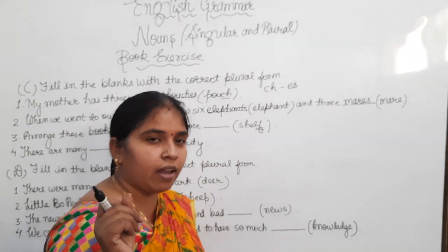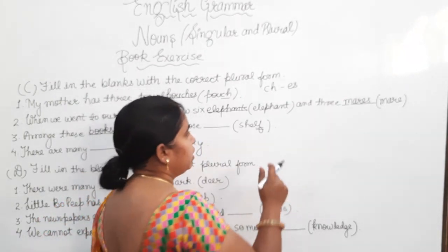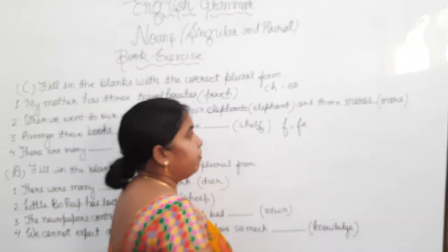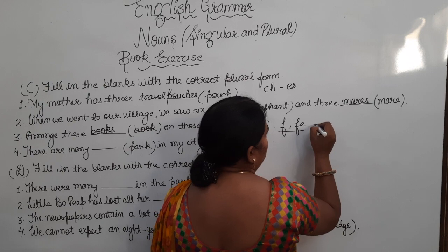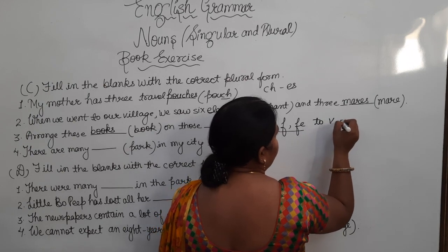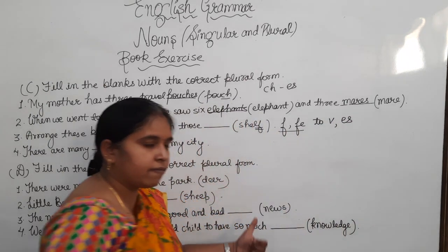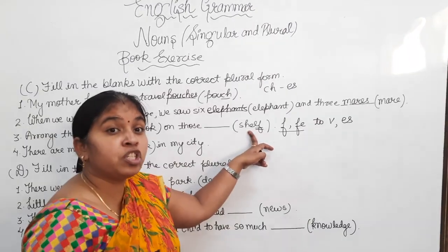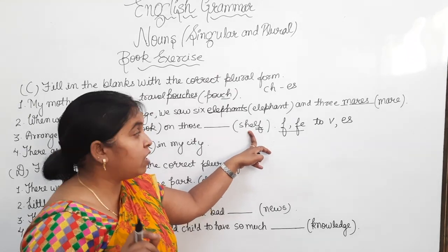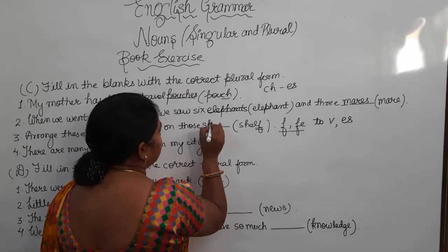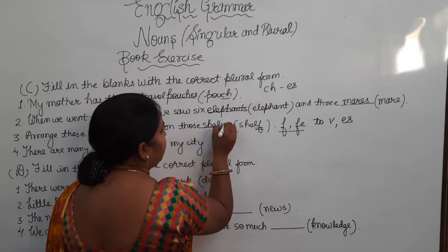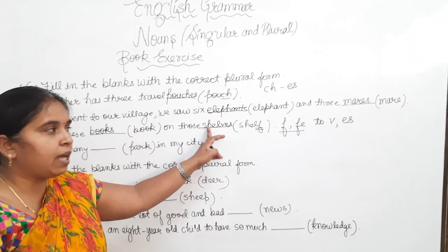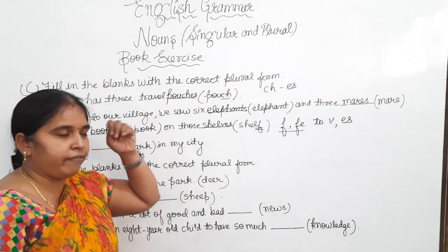When the last alphabet of the word is F or F-E, we change these to V and then add E-S. This we do as per the rule. So here, the shelf will become shelves. And what will be the spelling? S-H-E-L-V-E-S.